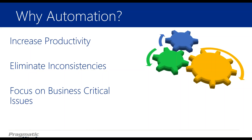Automation can also help us eliminate inconsistencies. Since we're using an automated process — a program, a code doing something for us over and over — we're eliminating the human element, as long as we build it correctly. If we build a flow and automate correctly, no matter how many times we repeat the same thing, we're going to have the same result. Taking time away from our day to focus on tedious things doesn't help us with business-critical issues, so automation allows us to spend more time on the important things.